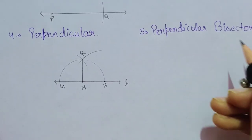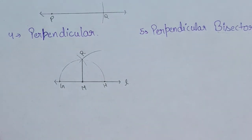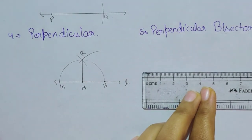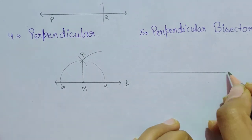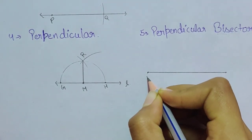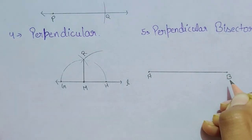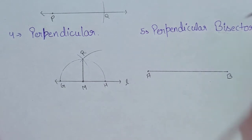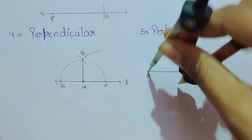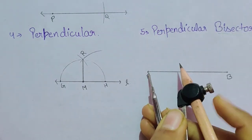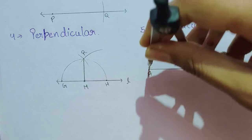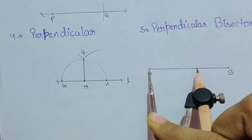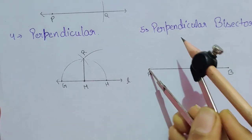The next topic is perpendicular bisector. A bisector cuts the line segment into two equal parts. First, construct a line segment and name it AB. For the perpendicular bisector, place the compass pointer on point A and open it to more than half the length of AB — by estimation, take a measurement that appears more than half.